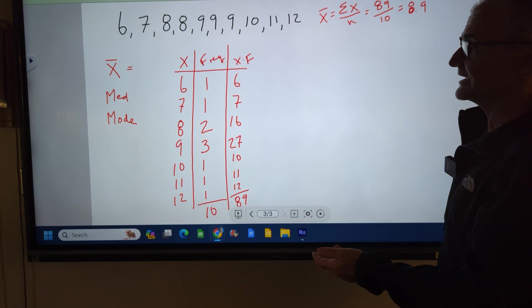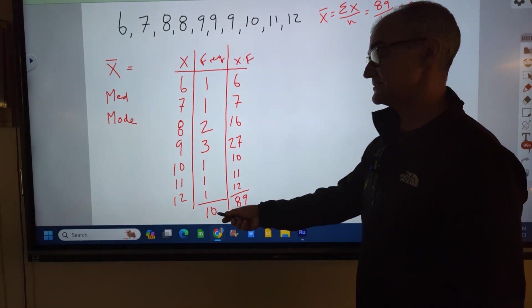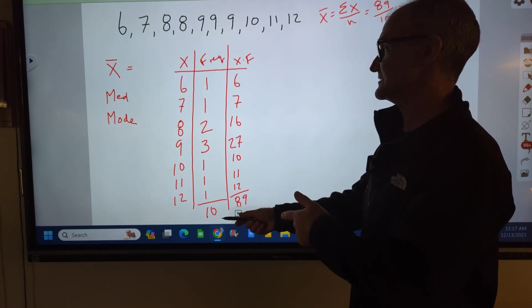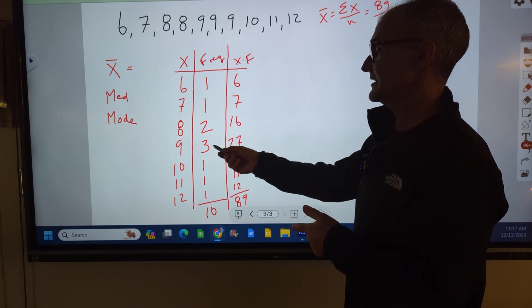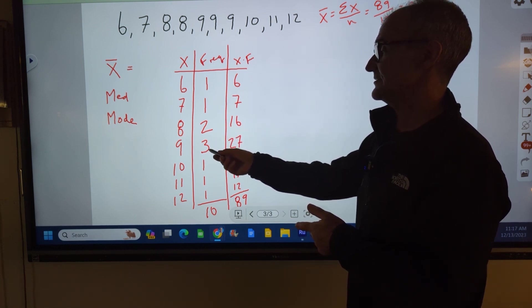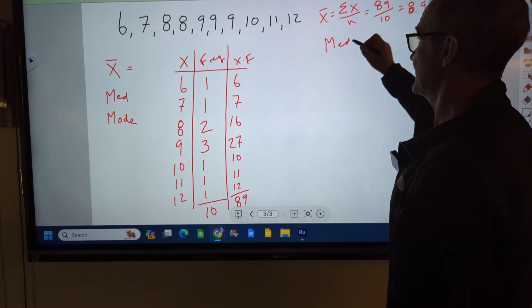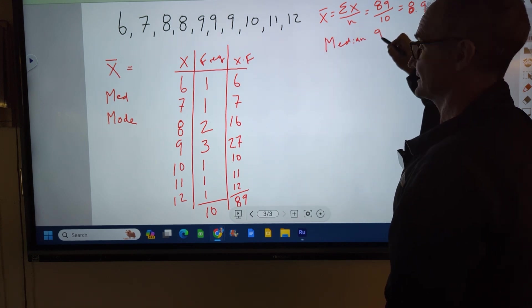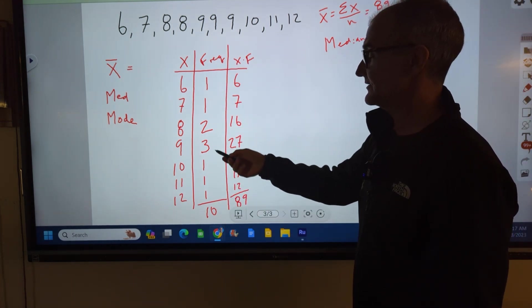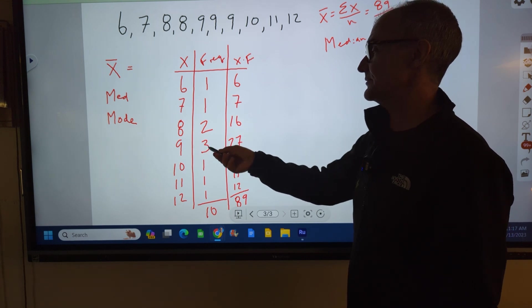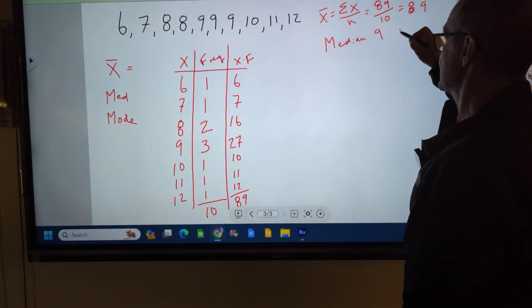The median is the middle value. I have an even number of values, so it's going to be the fifth and sixth value. This is going to be my first, second, third, fourth. My fifth and sixth value will be in this category. So my median is 9. And then my mode is the one that appears most frequently. I go down through here, I find the largest number of times the number appears, and my mode is also 9.